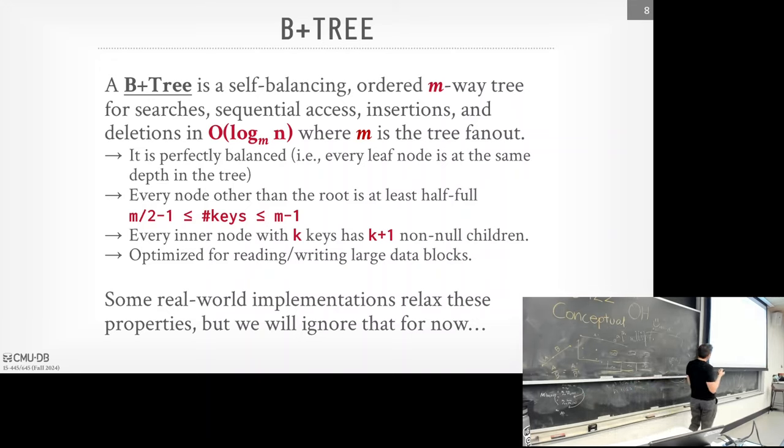Because there are no parent pointers on leaf nodes, when we do a split, we don't have to touch the other side of the tree — their parents haven't changed. The split point is always in the middle — no magic to it. The new inner node just gets the pointers down below.